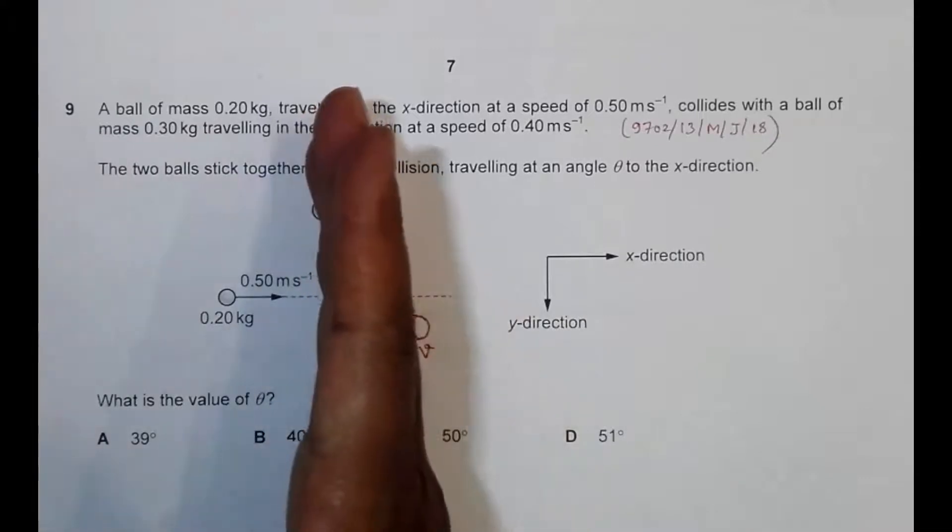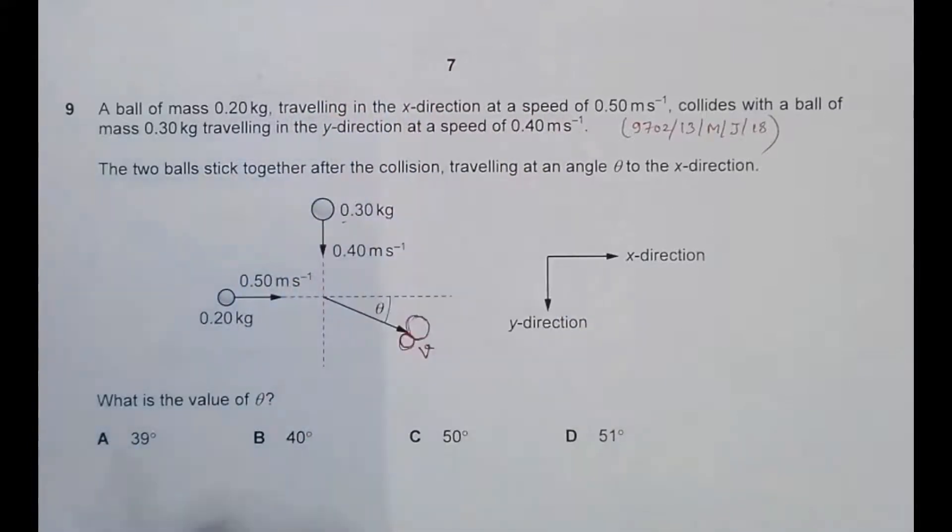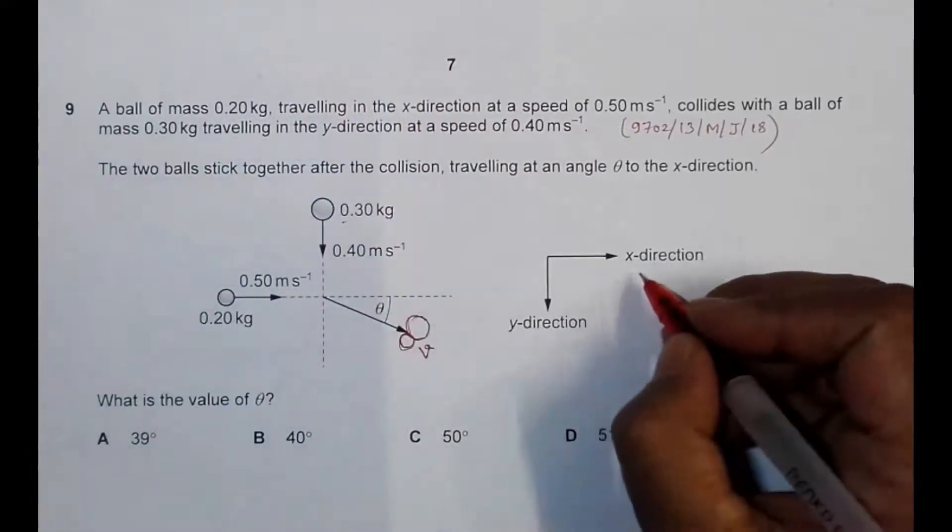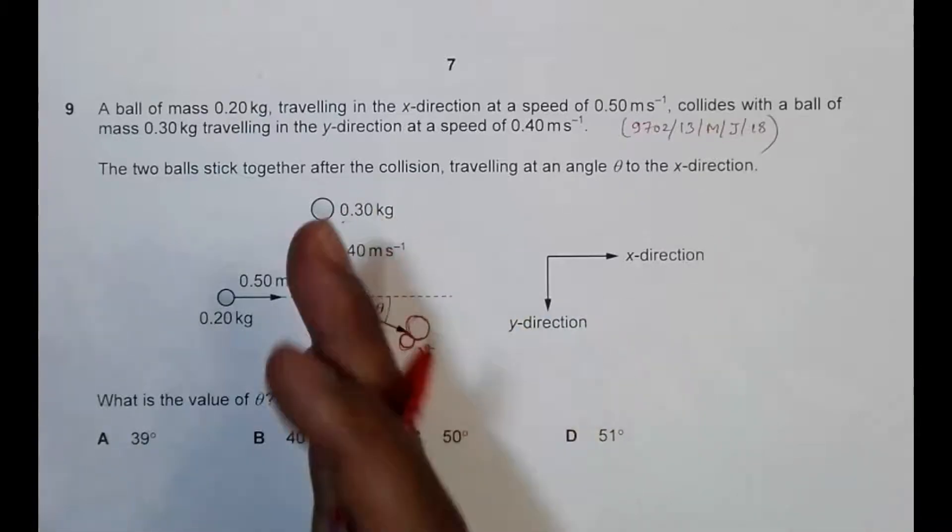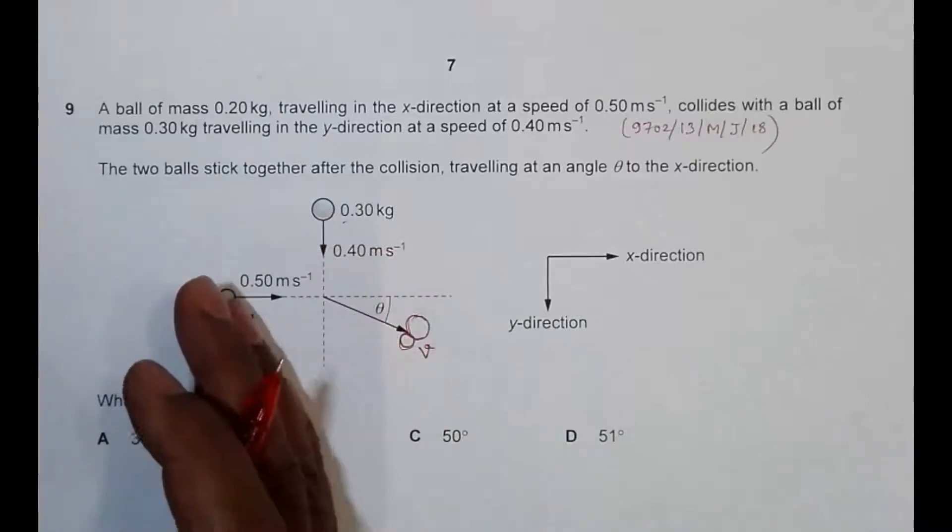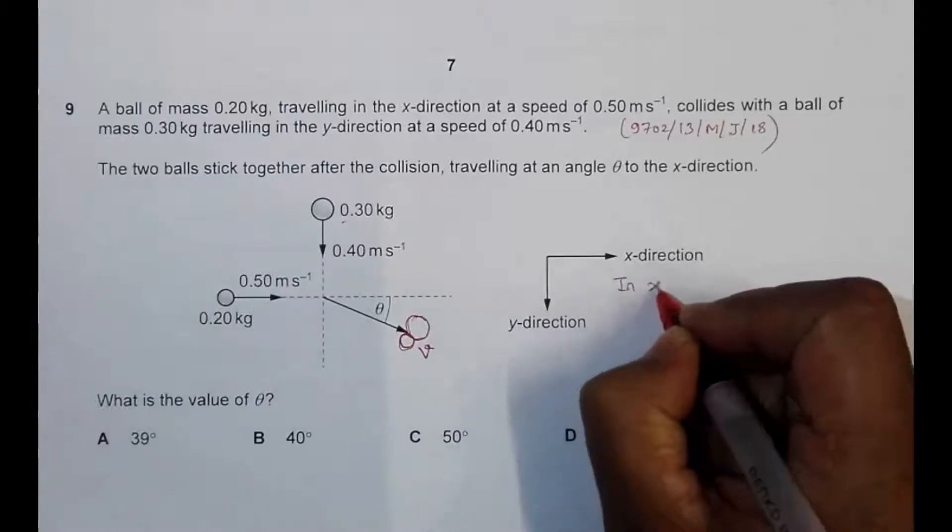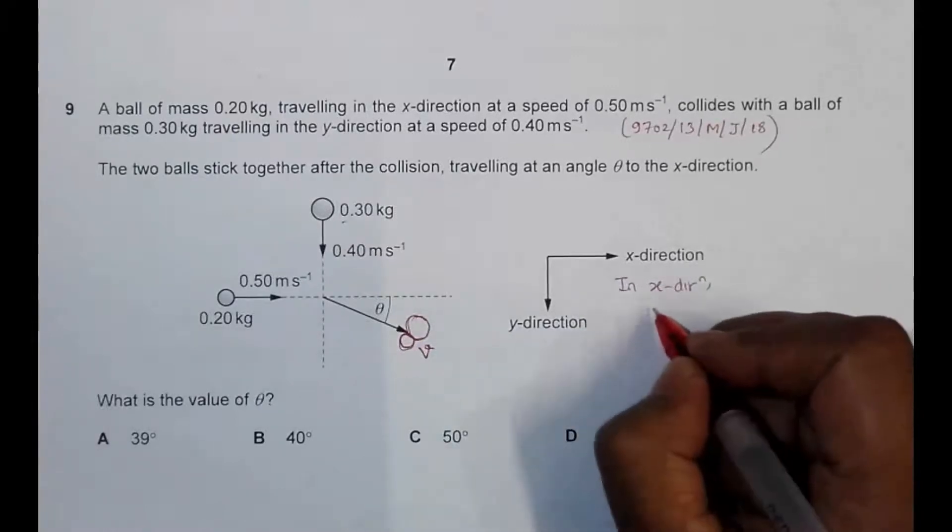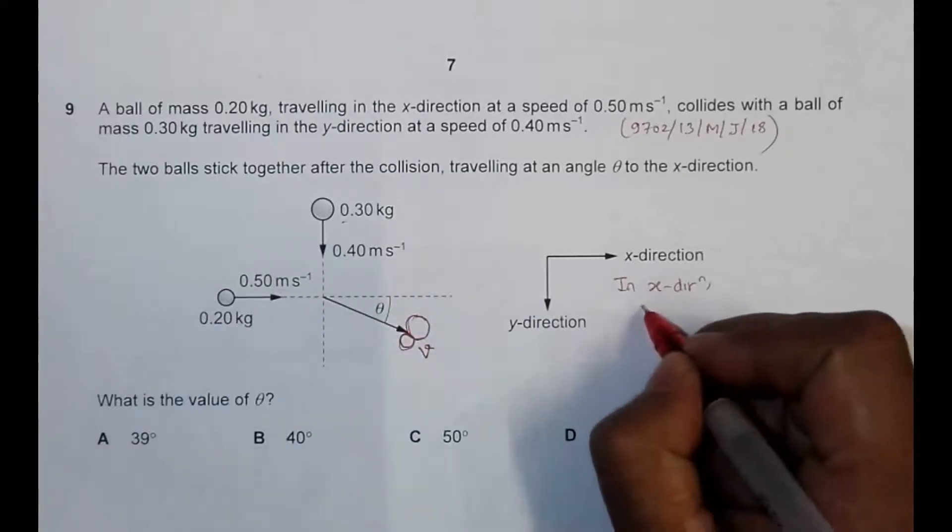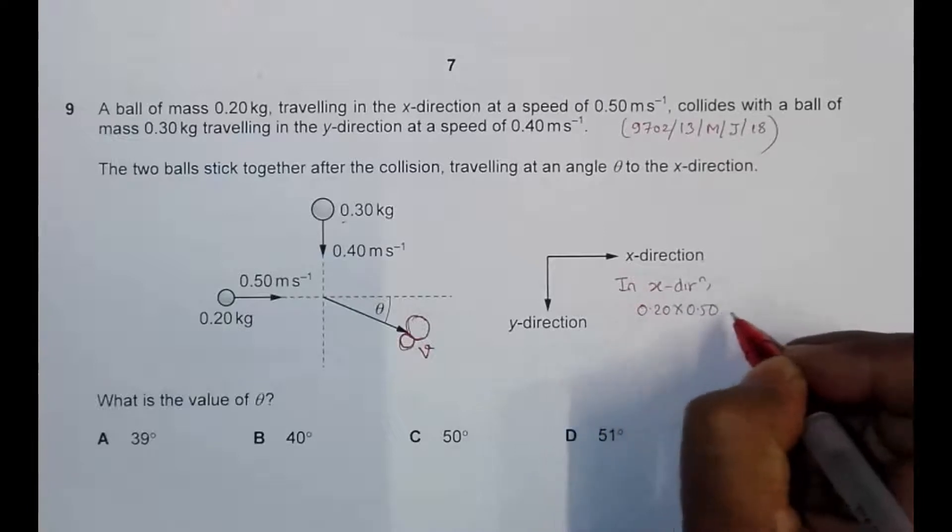So if I take the momentum of x direction only, I must have, since momentum in a straight line should be conserved, constant, whatever the case may be. So we should have the initial momentum before collision, the initial momentum in the x direction before collision. So in x direction, we must have mass into velocity here. So it is 0.20 into 0.50 equal to,